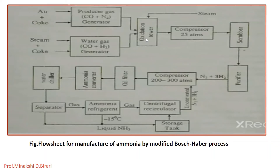The mixture of water gas and producer gas is taken into the oxidation tower where carbon monoxide is oxidized to carbon dioxide by steam in the presence of an iron oxide catalyst promoted by Cr2O3 (chromium trioxide) at 450°C. The gaseous mixture coming out of the oxidation tower, consisting of hot nitrogen, hydrogen, carbon dioxide and unoxidized CO, is then cooled by passing through a heat exchanger.